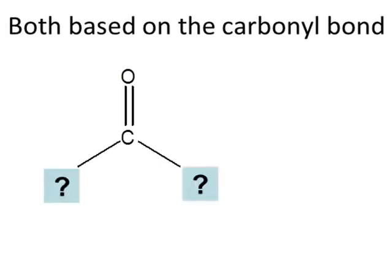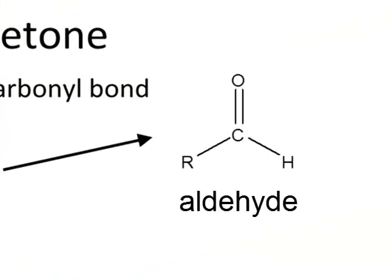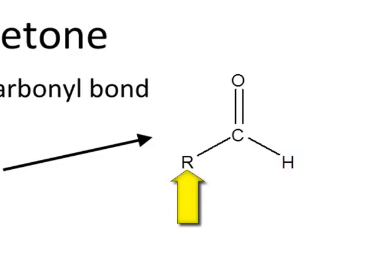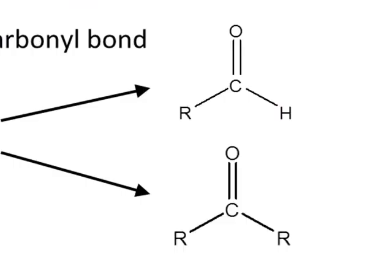What's attached to those single bonds is what dictates whether we're looking at an aldehyde or a ketone. In the case of an aldehyde, we'll have a carbonyl bond that has at least one hydrogen directly connected to the carbon. The other side can be an R group — whether a methyl, ethyl, or something more complex — or it can be another hydrogen. Ketones, on the other hand, have a carbonyl bond with no hydrogens attached; instead, there are two R groups, which can be simple or complex.